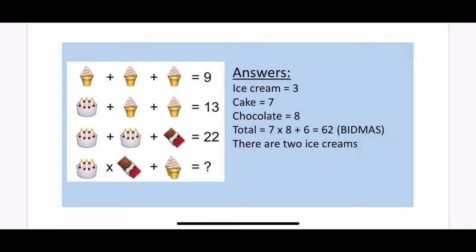That makes the chocolate bar worth 8, and then the final answer is 62. So there are 2 ice creams. We need to do the 7 multiplied by 8 first, which is 56, and then add on the 2 ice creams, so add on 6 equals 62.